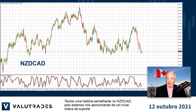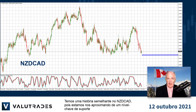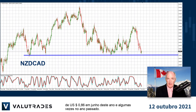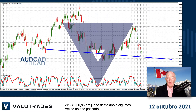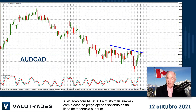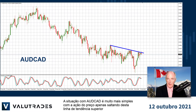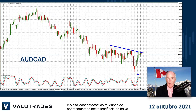We have a similar story on Kiwi CAD as we are approaching a key level of support at 0.86 from June of this year and a couple of times last year. The situation with Aussie CAD is much simpler, with price action just bouncing off this upper trend line and the stochastic oscillator turning from overbought in this downtrend.